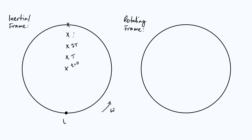At t equals zero the observer is at the bottom. When t equals capital T, the observer has moved around to somewhere over here. Because the angular velocity is constant, after a time of 2T the angle rotated through is twice as big — so we have equally spaced angular intervals. We then draw on the next two positions at 3T and 4T as well.